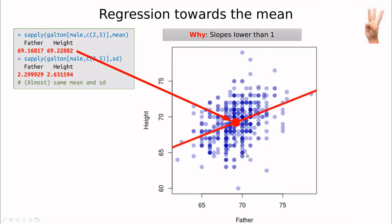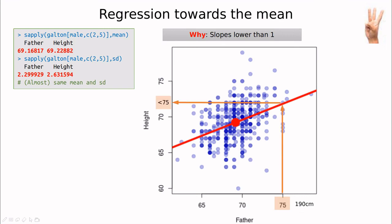So whenever I take an individual with a height of 75 inches (about 190 centimeters), this slope means the son is going to be shorter — closer to 65 inches. And if I do the same with a short guy at around 165 centimeters, the son is going to be taller. This is called regression towards the mean: if you are above the mean, because the correlation is lower than one, you'll end up slightly closer to the mean. If you are below the mean, you'll be closer to the mean but from below.